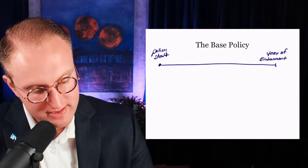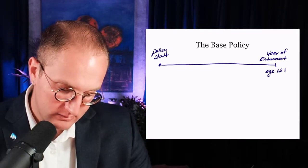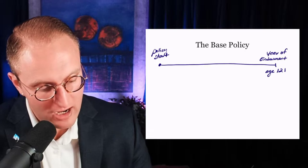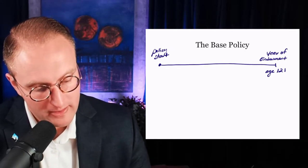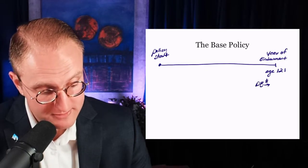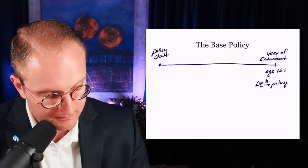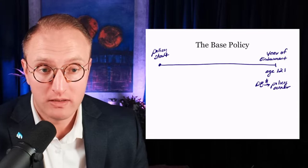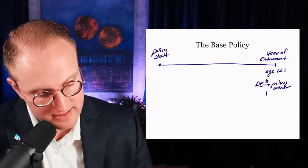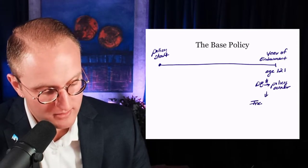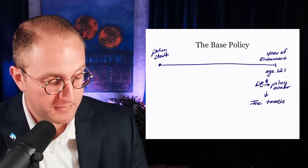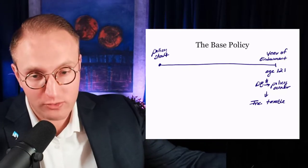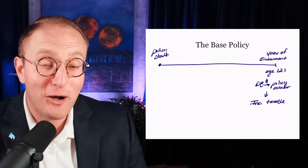At the year of endowment — which in the United States is age 121, and in Canada as of this recording is age 100 — if the insured were to live beyond age 121, death benefit would still be paid, but it would go to the policy owner rather than the beneficiary. If that does happen, and I'm not a tax advisor, but this is an income taxable event. So it's okay to pass away while your policy is in force, meaning before age 121.